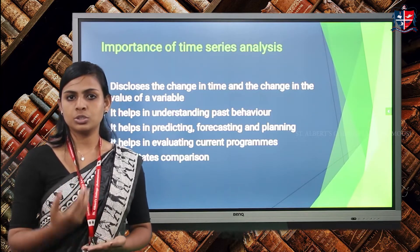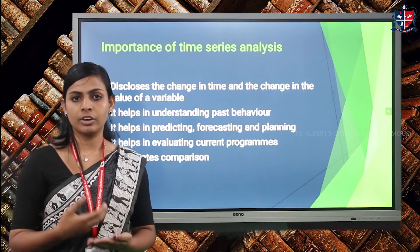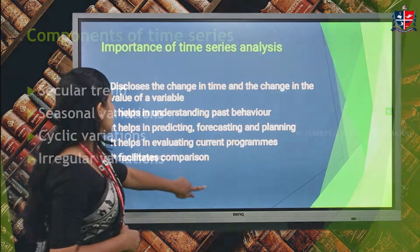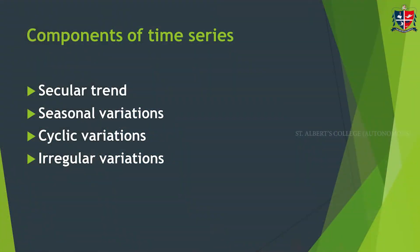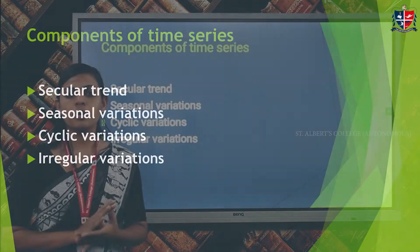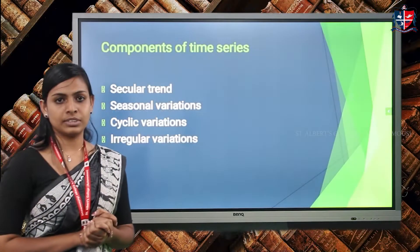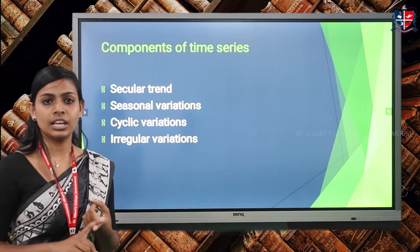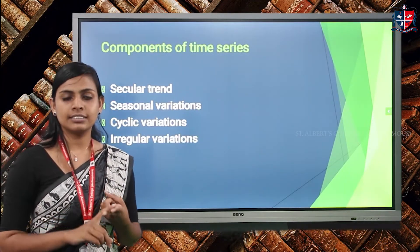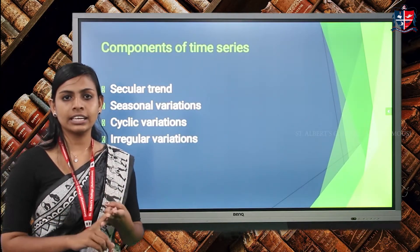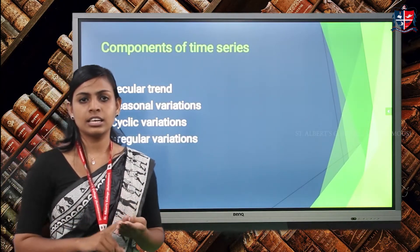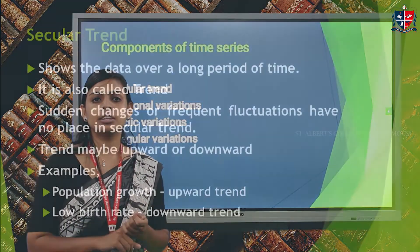Now let's look at the components of time series. There are four components: secular, seasonal, cyclic, and irregular.